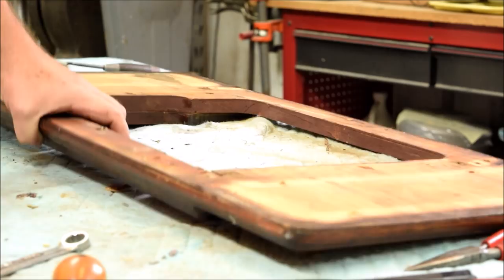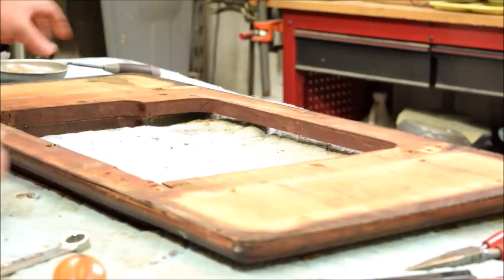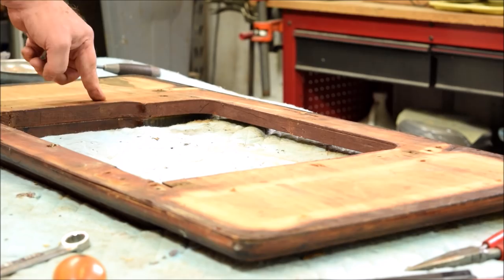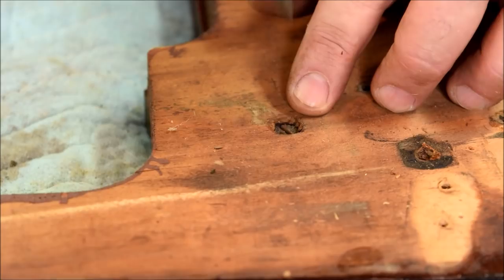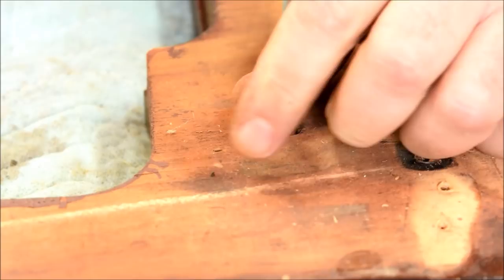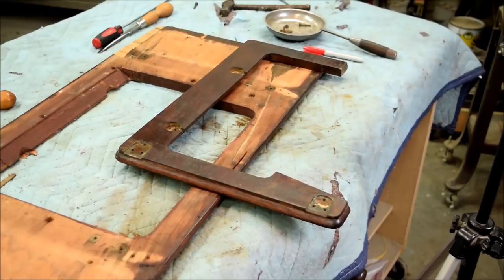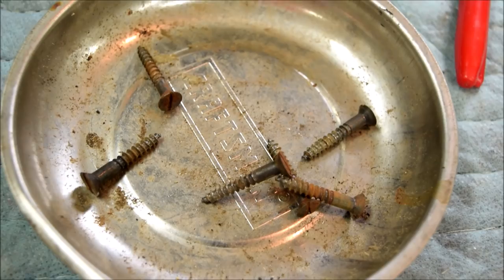And the last thing we have to do on the cabinet disassembly is to get this piece off here, and this piece is just held on with screws from underneath. Two, three, four, five screws. Let me get these screws taken out, and we'll move on to the base. And there's that piece removed from the work surface. It was held in with these six screws.